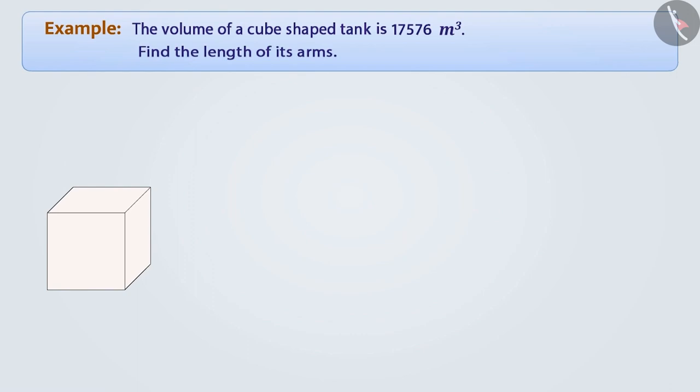You must know that all the sides of a cube are equal. Similarly, you will also know that the volume of a cube is the cube of one of its sides. Here we know the volume of the cube tank. If we had to find the length of the arm of the tank from this, how would we do this?